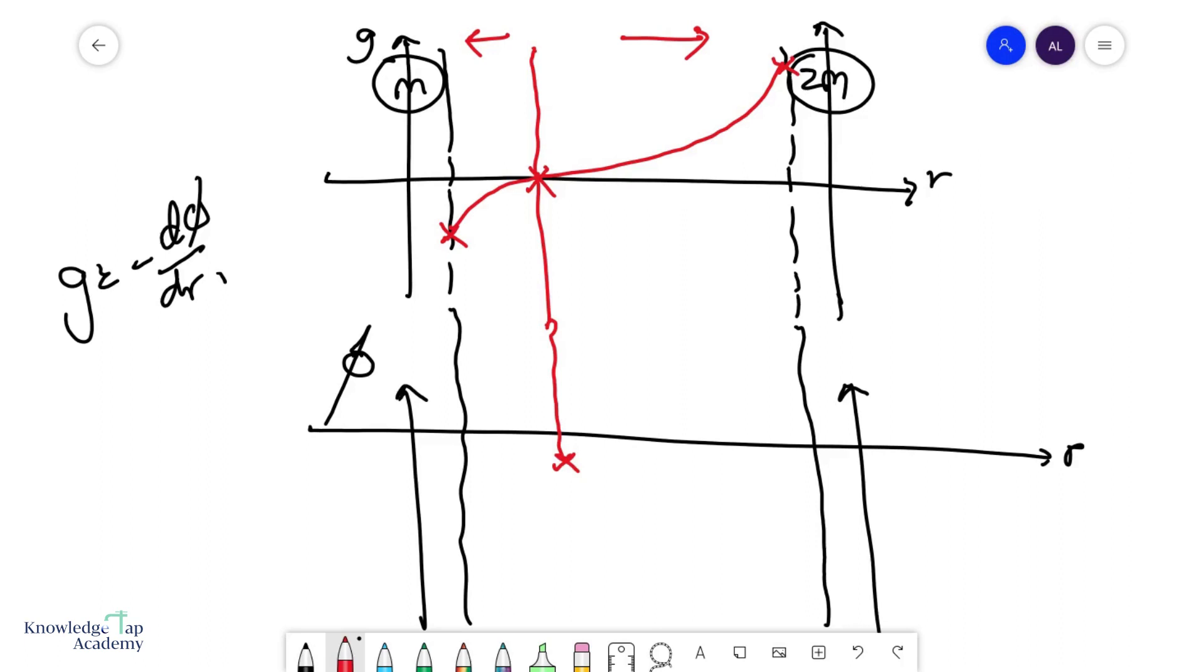And same, we expect the potential at the surface of the smaller mass to have a smaller number than that at the bigger mass. And then we just join the graph and we will get a negative U shape like this. And this is how you draw your phi graph.